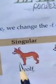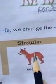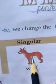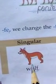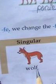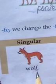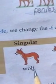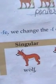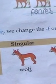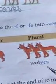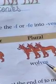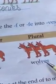Now see the second example: wolf. This is a wolf in singular form and its ending is with F. So we will change it with VES.